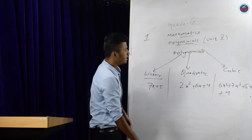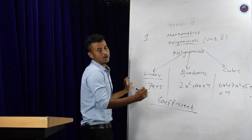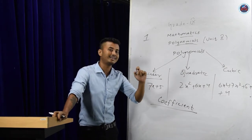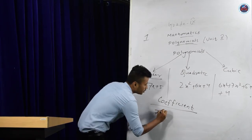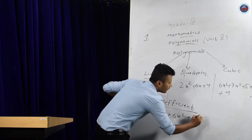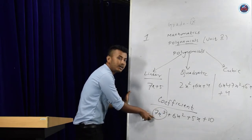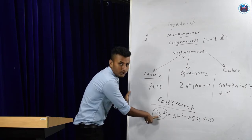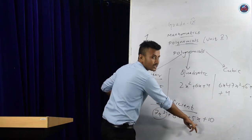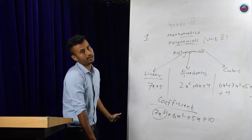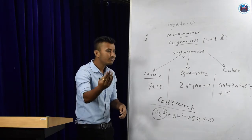One last concept: coefficient. What is the meaning of coefficient? The constant that lies in front of a variable is called its coefficient. For example, in 7x³ plus 6x² plus 5x plus 10: the coefficient of x³ is 7, the coefficient of x² is 6, and the coefficient of x is 5. With these few basic concepts, exercise 2.1 will be extremely easy for you.